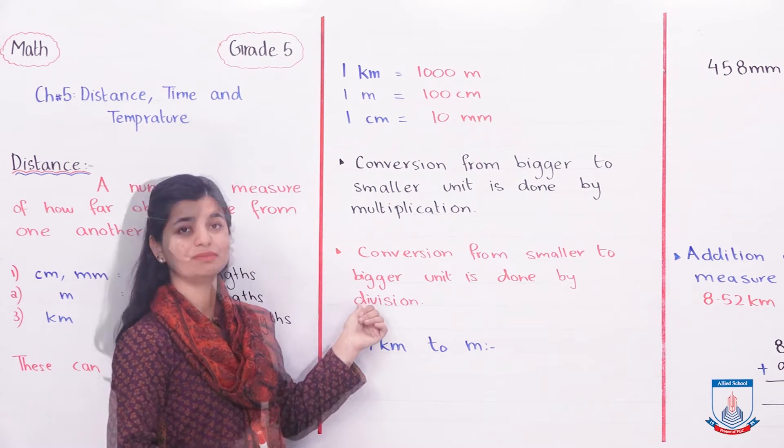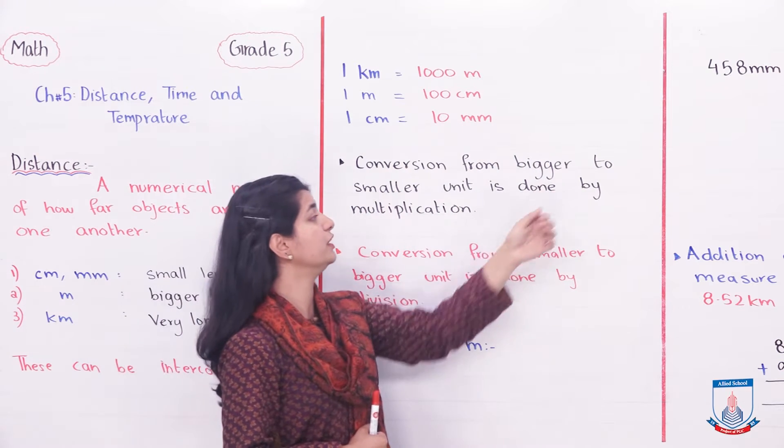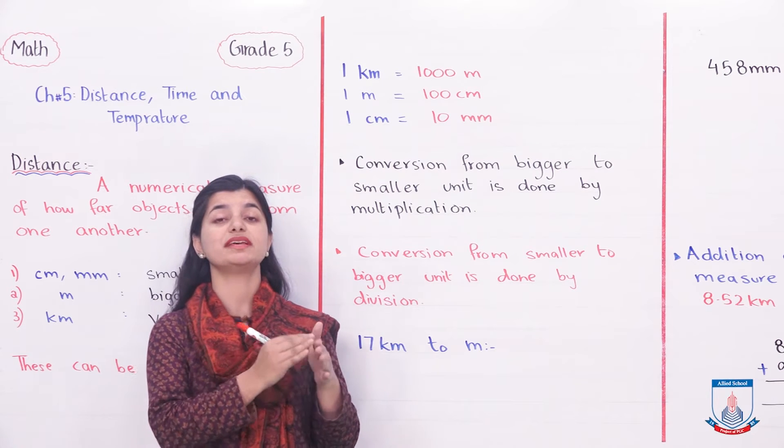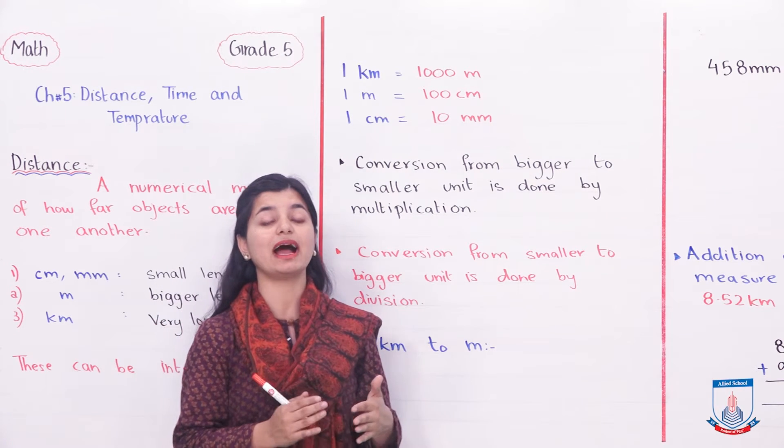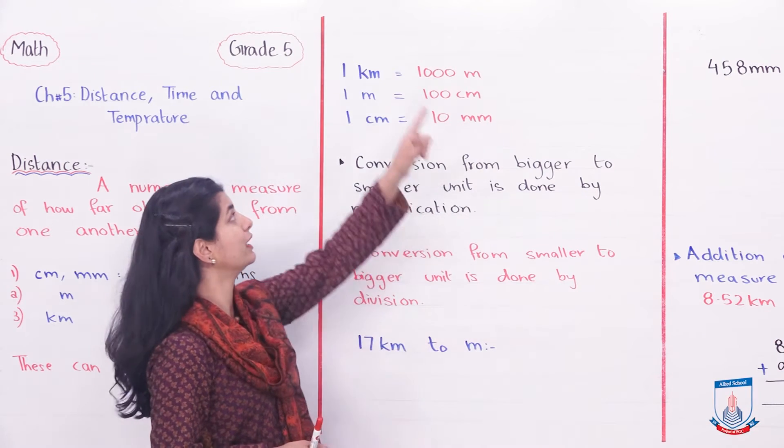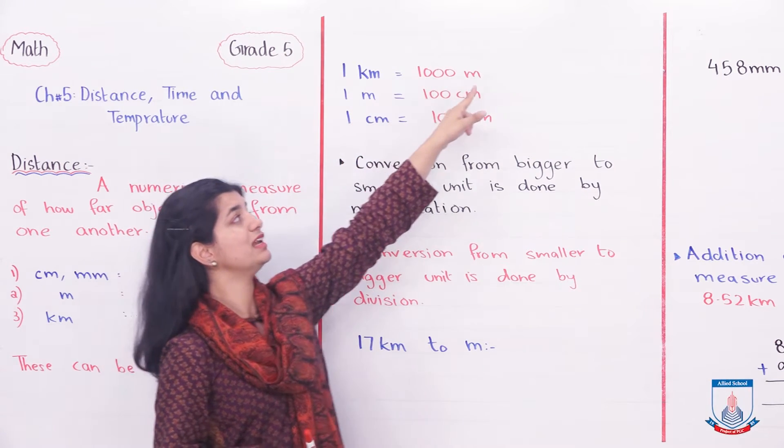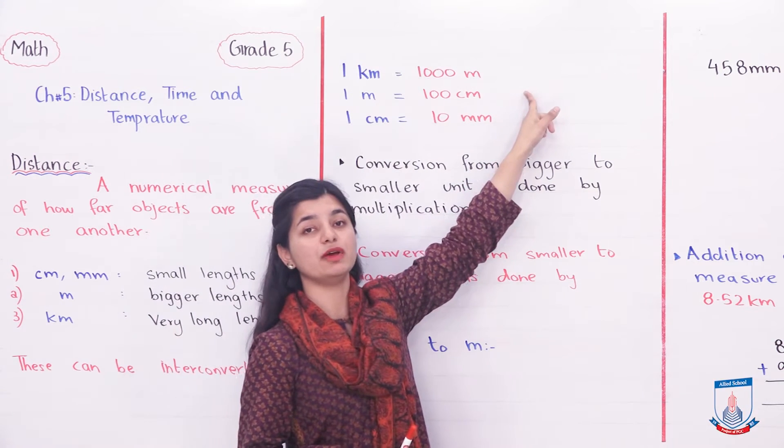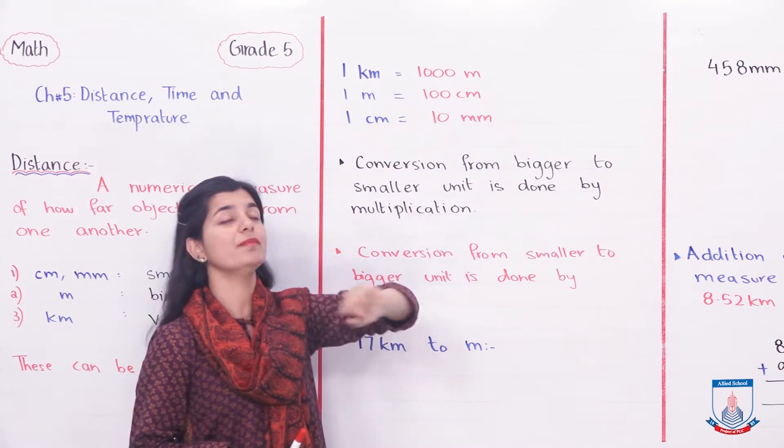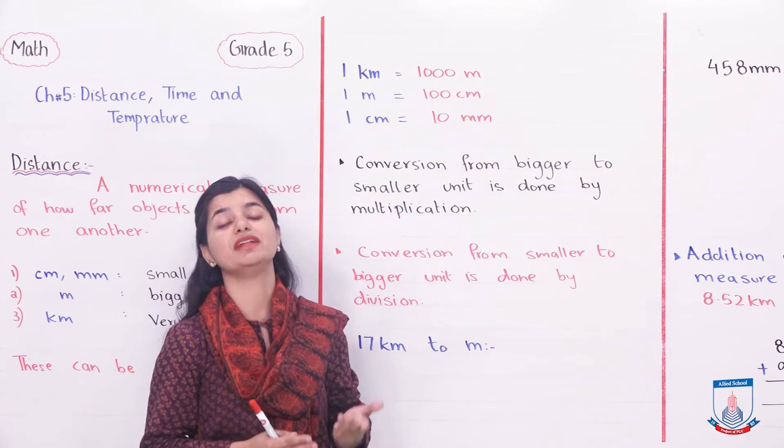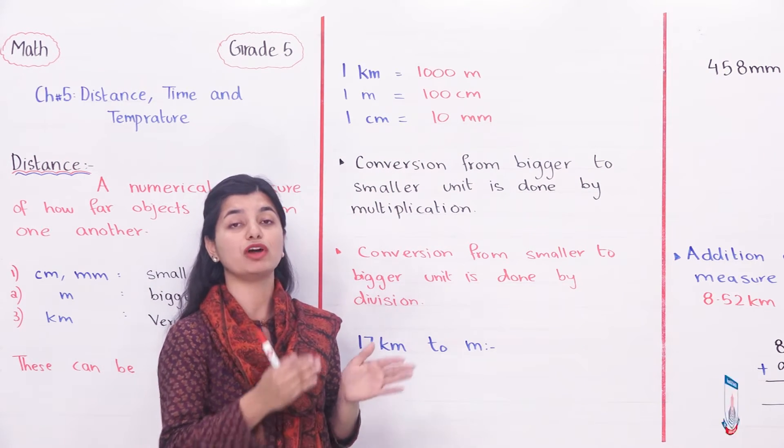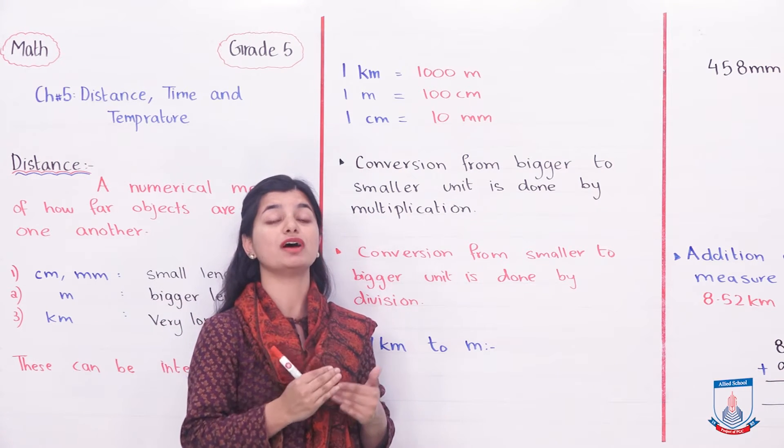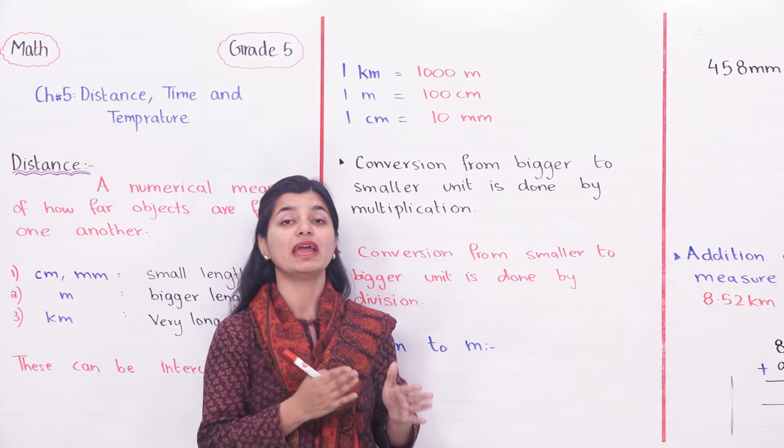Next, we will see two basic rules. Conversion from bigger to smaller unit is done by multiplication. When you convert from a large unit to a small unit, you will multiply. What does this mean? If we look at kilometers and meters, which unit is bigger? Kilometers. So if you have a length in kilometers, you will multiply. And you will multiply by what? Thousands, which is the difference. If you have 50 kilometers, you will multiply it by 1,000.